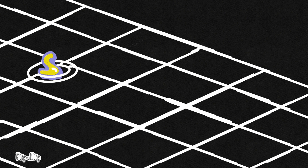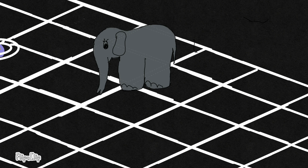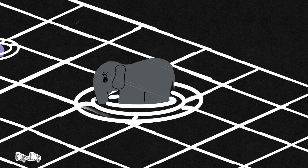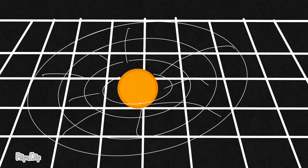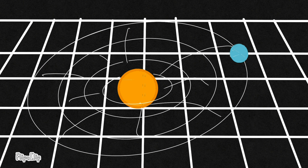The smaller mass causes a smaller distortion of spacetime, while the bigger mass causes a bigger distortion. A star like our sun causes a huge distortion of the fabric of spacetime. So anything traveling in a straight trajectory would not go straight but instead follow a curved path around the sun — and this is how orbits work.